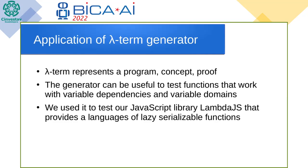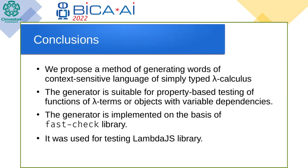One may consider using the generator directly as a randomizer of a value that depends on its context. To sum up, we propose a method of generating words of context-sensitive language on the example of simply typed lambda calculus. The generator is suitable for property-based testing of functions of lambda terms or objects with variable dependencies. It was implemented with FastCheck library and was successfully used to test our JavaScript library.